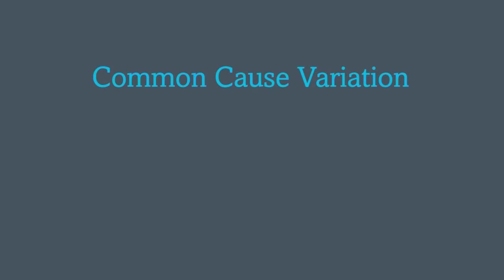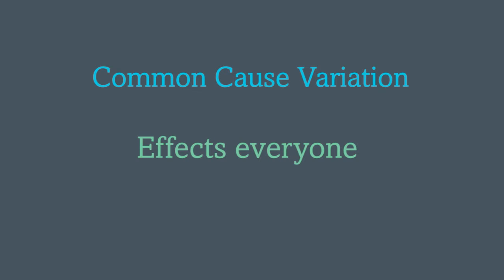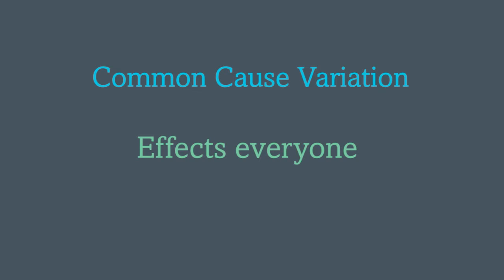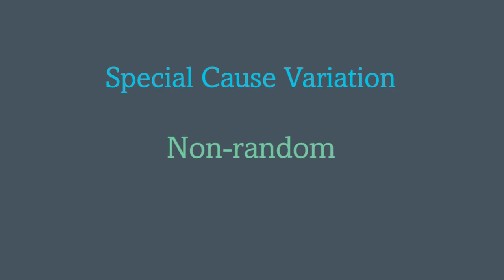In improvement science, we learn to recognize two types of variation. Common cause variation is variation that is part of the daily normal work — it's built into the system, random, and affects everyone. And special cause variation is variation that's attributable to a cause and non-random.